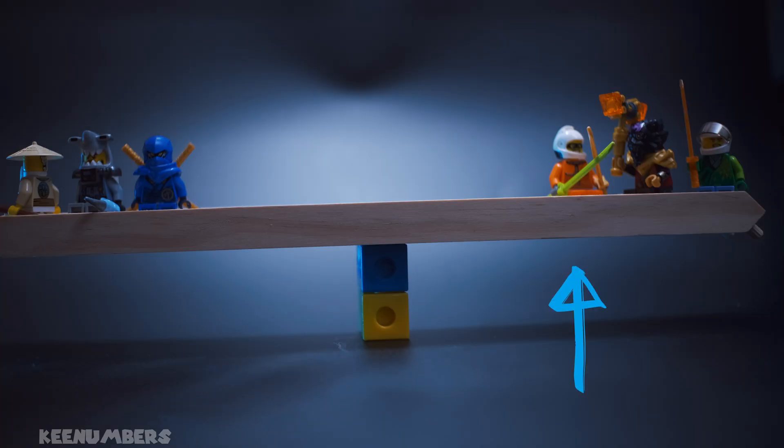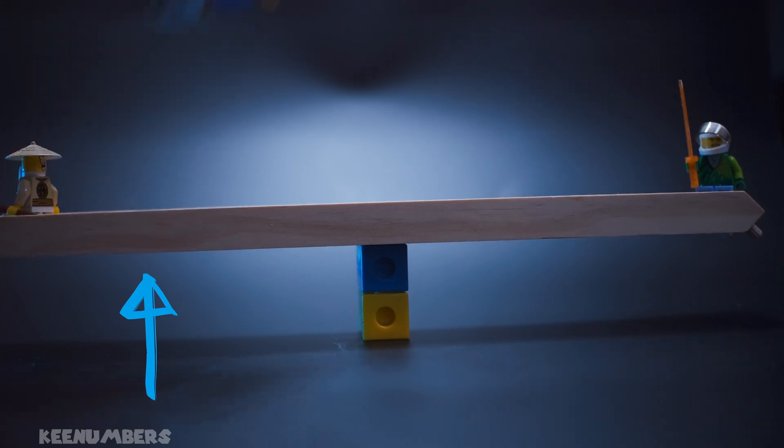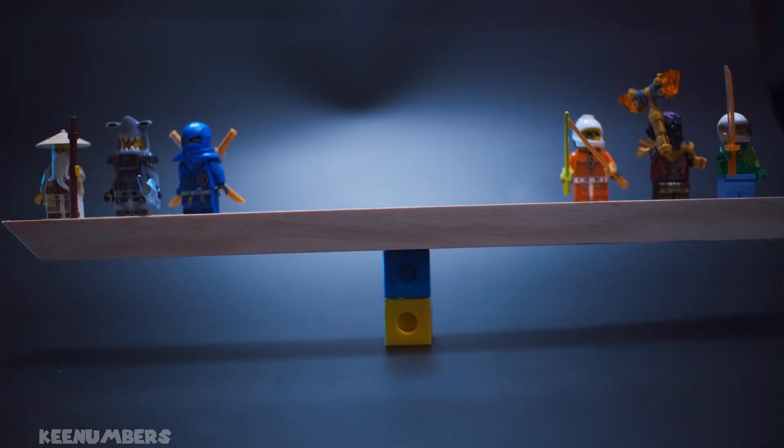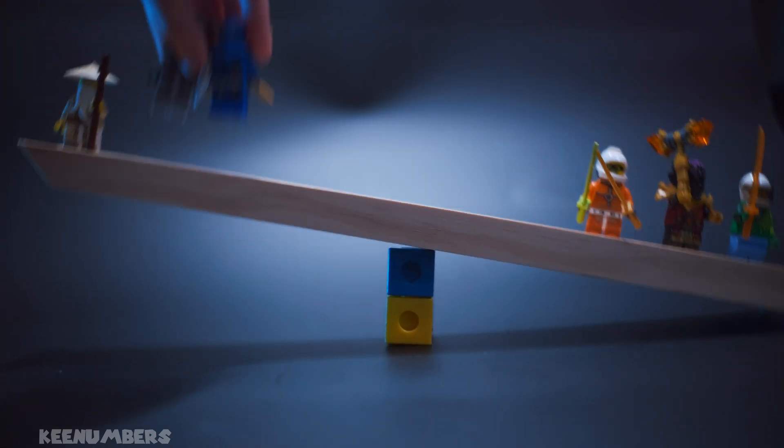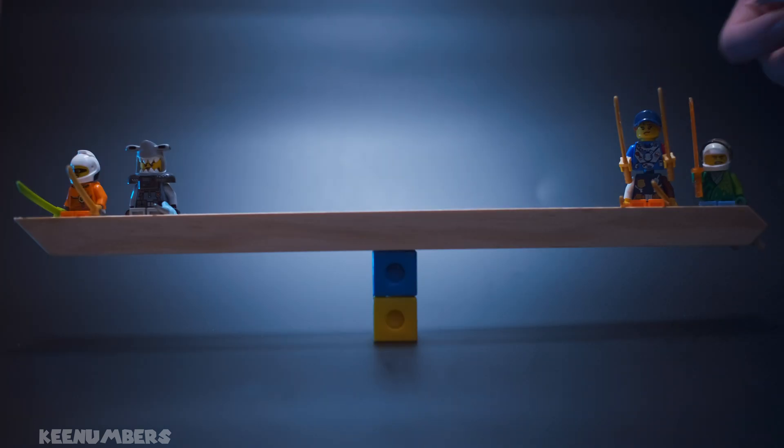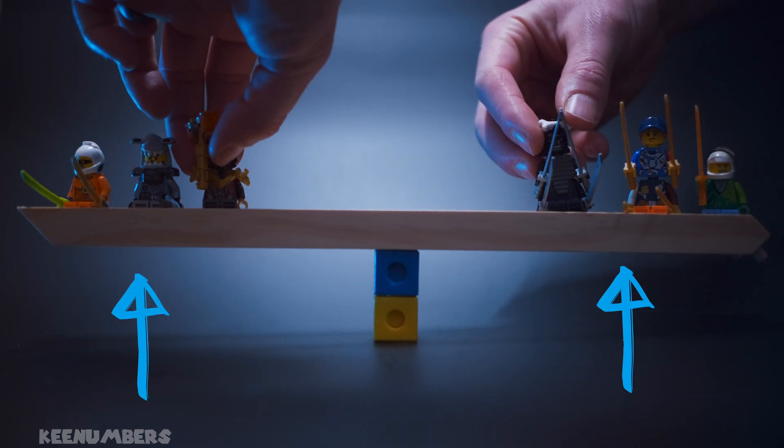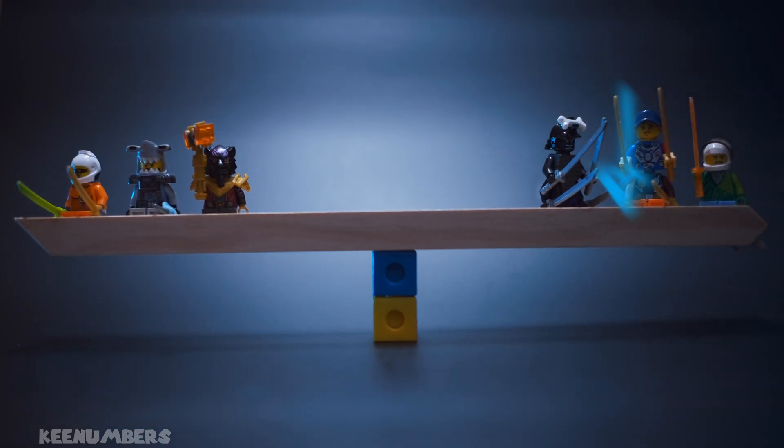If I take away some minifigures here, I have to subtract the same amount on the other side as well. If I'm going to keep balance, if I add a minifigure to one side, I have to add a minifigure onto the other side too.